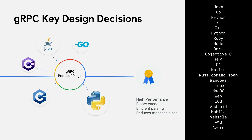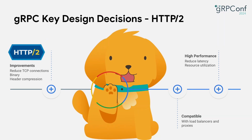gRPC boasts extensive support of languages and platforms, as evidenced from this list. The exciting news, as Kevin mentioned, is that gRPC Rust is coming soon, so don't miss today's session if you want to learn more about it. Another key design decision is that gRPC is built on top of HTTP/2, which makes it compatible with a variety of load balancers and proxies over the internet. HTTP/2 reduces TCP connections, is binary, and uses header compression — all of which make gRPC high performance, reduce latency, and make better use of resources.